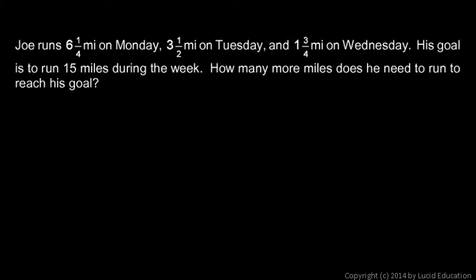Well first let's add these numbers up. We're going to add up the six and a quarter and the three and a half and the one and three-quarters. That's how far he ran on each of those three days: Monday, Tuesday, and Wednesday. So adding those up will give us the total miles that he's run so far. So we add six and a fourth plus three and a half plus one and three-fourths.